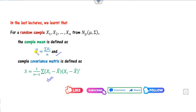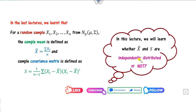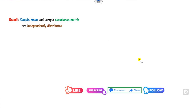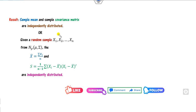The question that arises is whether the sample mean and the sample covariance matrix are independently distributed or not — that is the objective of this lecture. The first result I will prove is that the sample mean x̄ and the sample covariance matrix S are independently distributed. In other words, if you have a random sample x₁ up to xₙ, then x̄ and S are independently distributed.